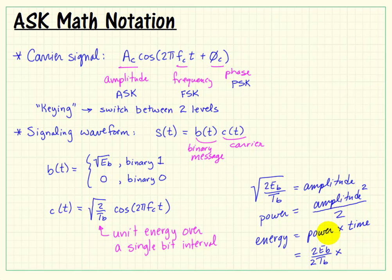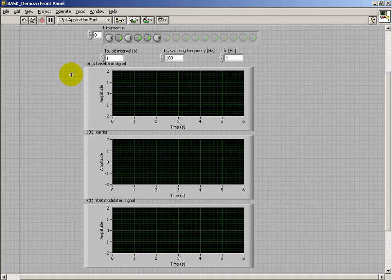And making some substitutions here, time would correspond to a single bit interval. Taking care of some cancellation, we find that indeed the energy works out to be simply e sub b, the energy per bit. So all of those initially look somewhat odd, but they all work out to give us something that makes sense.